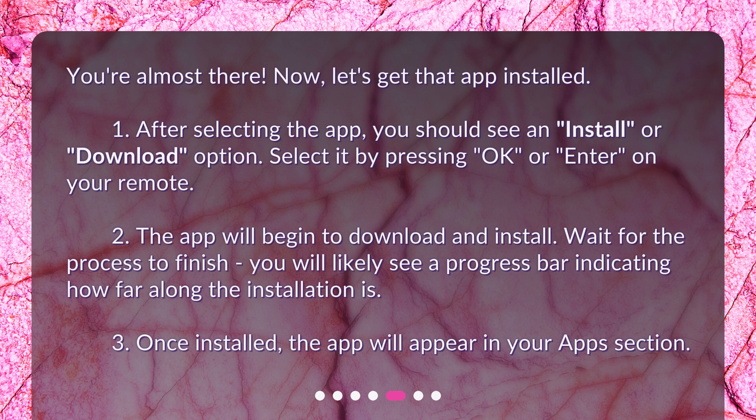Now, let's get that app installed. 1. After selecting the app, you should see an Install or Download option. Select it by pressing OK or Enter on your remote. 2. The app will begin to download and install. Wait for the process to finish. You will likely see a progress bar indicating how far along the installation is. 3. Once installed, the app will appear in your App section.